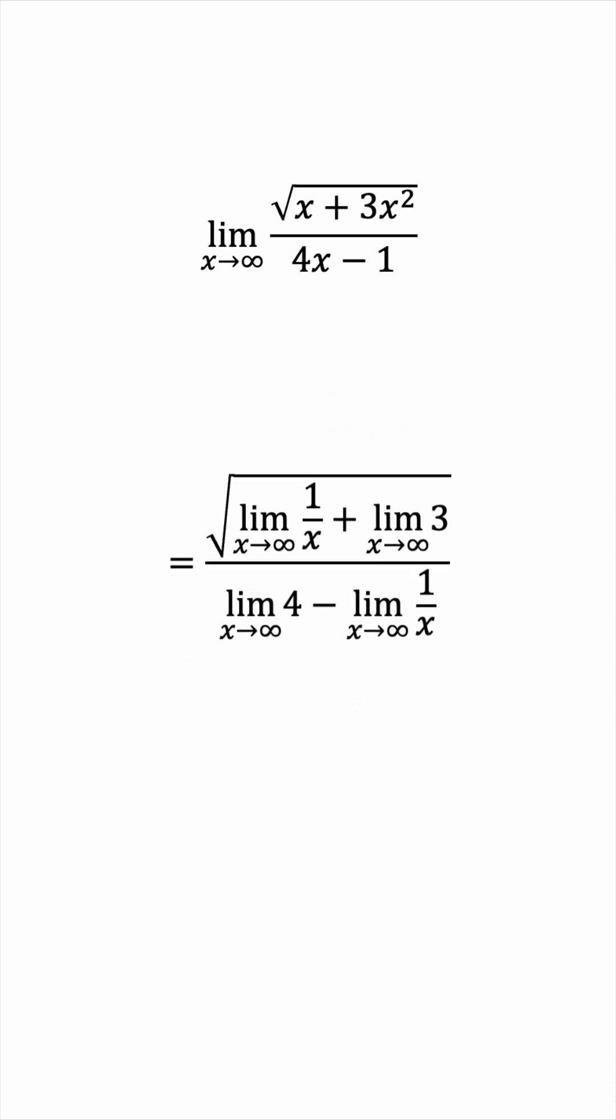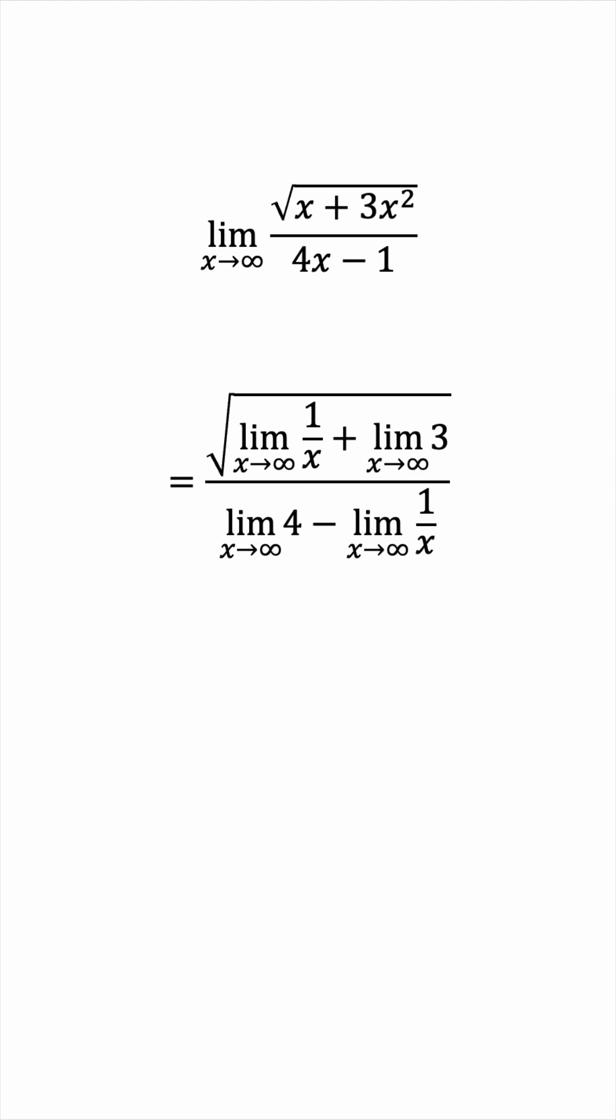And now, the limit as x approaches infinity of 1 over x is obviously 0, and the limit of a constant is just the constant itself. So this works out to be the square root of 0 plus 3 over 4 minus 0, which is the square root of 3 over 4.